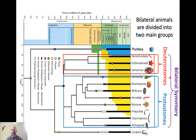Most phyla of animals have bilateral symmetry. Sponges do not have symmetry, and cnidarians mostly have radial symmetry, but all other animal groups tend to have bilateral symmetry. There are some interesting exceptions — echinoderms often have radial symmetry, but we think they evolved from ancestors that had bilateral symmetry. Annelids, arthropods, and vertebrates all have bilateral symmetry, so it brings together most animal groups.